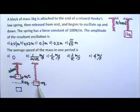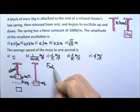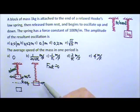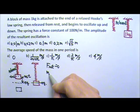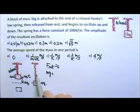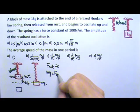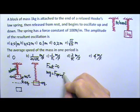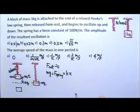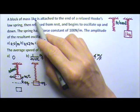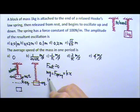So when the block is at the equilibrium position, the net force is 0. This means the downward Mg must be cancelled by the upward spring's force. And we know the spring's force is Kx.